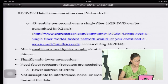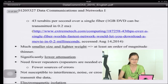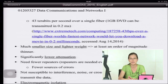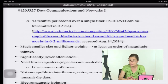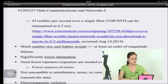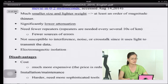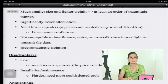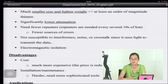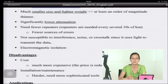At 43 terabytes per second, a DVD of one gigabyte could be transmitted in only 0.2 milliseconds — very fast. Movies would play continuously with no stopping along the way because you can send the data so quickly.